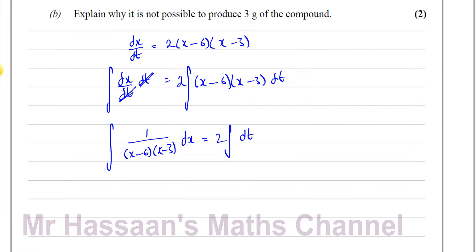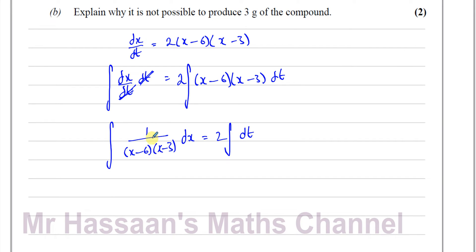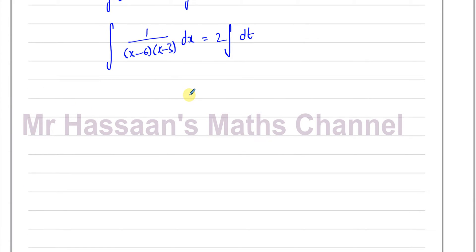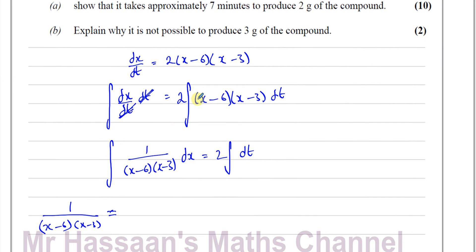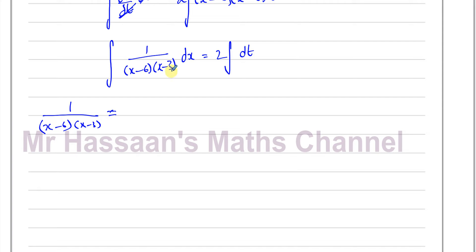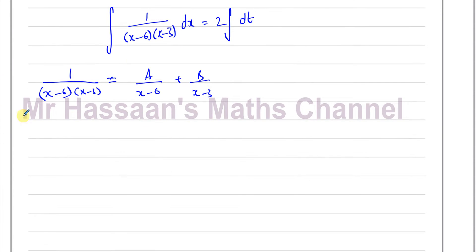Before integrating, we need to split 1 over (x minus 6)(x minus 3) into partial fractions. We write it as A over (x minus 6) plus B over (x minus 3). Multiplying both sides by (x minus 6)(x minus 3) gives 1 equals A(x minus 3) plus B(x minus 6).